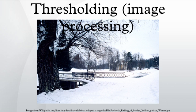To make thresholding completely automated, it is necessary for the computer to automatically select the threshold T. Sajjan and Sankar categorized thresholding methods into six groups based on the information the algorithm manipulates. The first group is histogram shape-based methods, where, for example, the peaks, valleys, and curvatures of the smoothed histogram are analyzed.